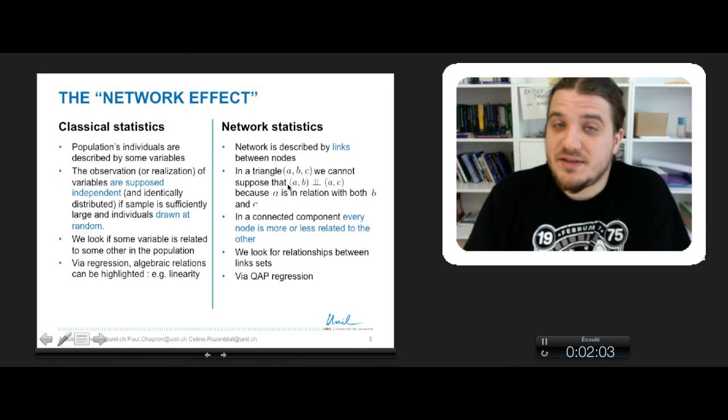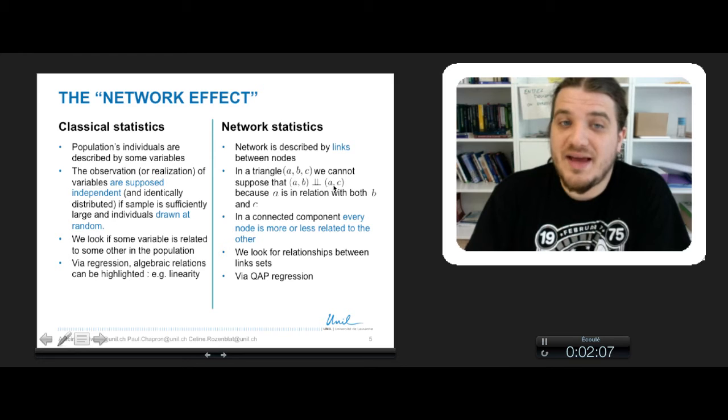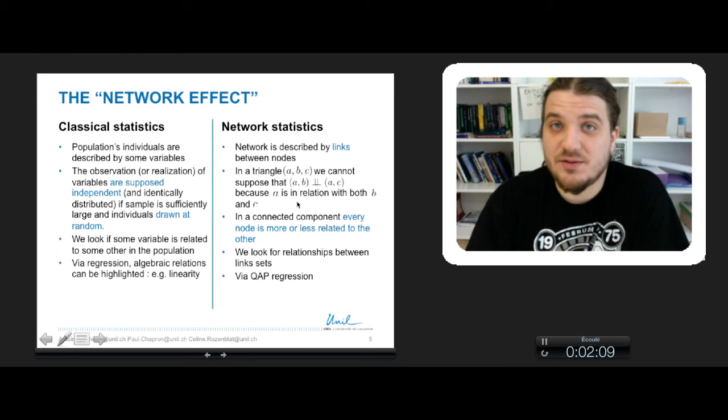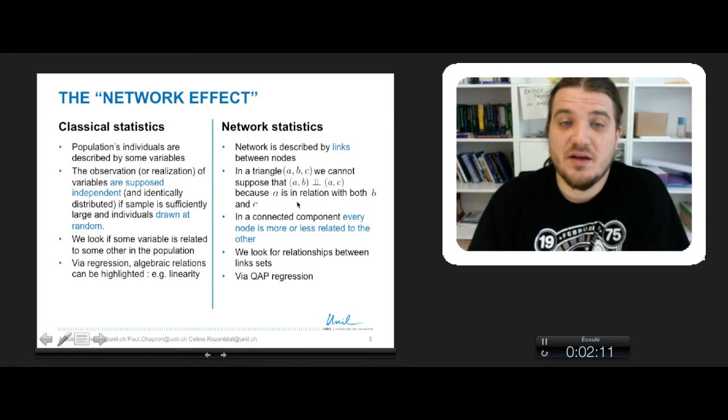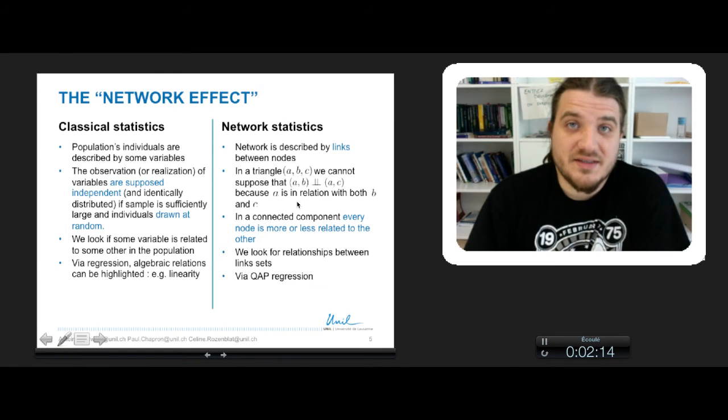you cannot suppose that the link between A, B is independent of the link between A, C, because A is both in relation with B and C. And in a connected component, basically every node is related to the other.